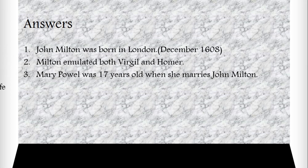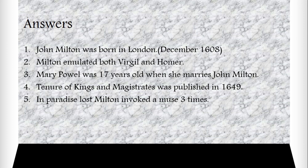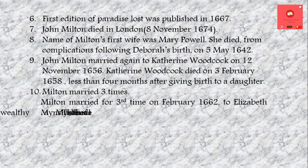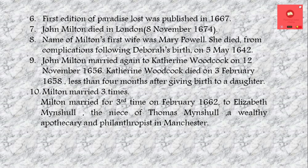Let's discuss all these answers step by step. John Milton was born in London in December 1608. Milton emulated both Virgil and Homer. Mary Powell was 17 years old when she married John Milton. Tenure of Kings and Magistrates was published in 1649. In Paradise Lost, Milton invoked a muse three times. The first edition of Paradise Lost was published in 1667. John Milton died in London on 8th November 1674. The name of Milton's first wife was Mary Powell.